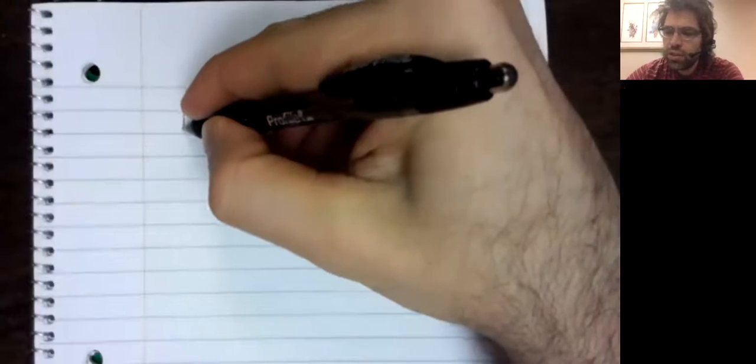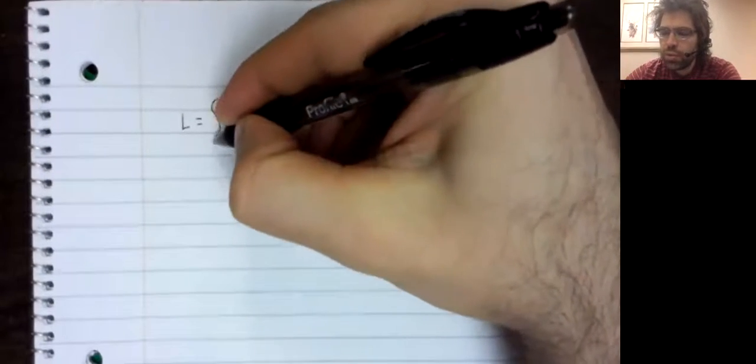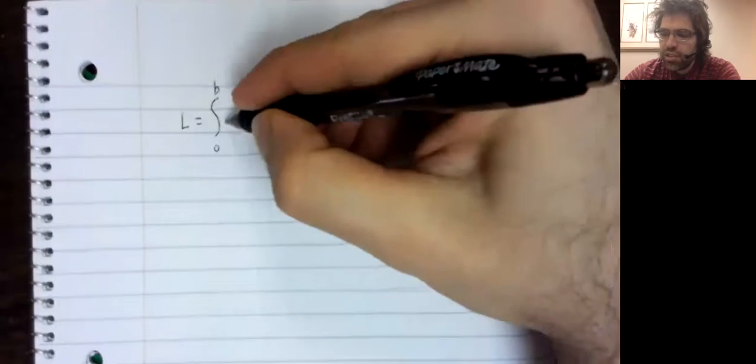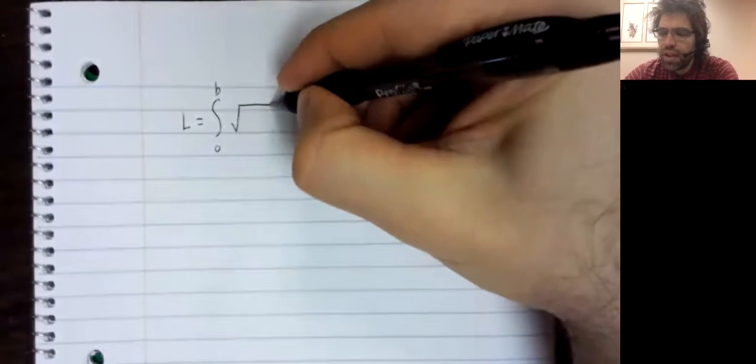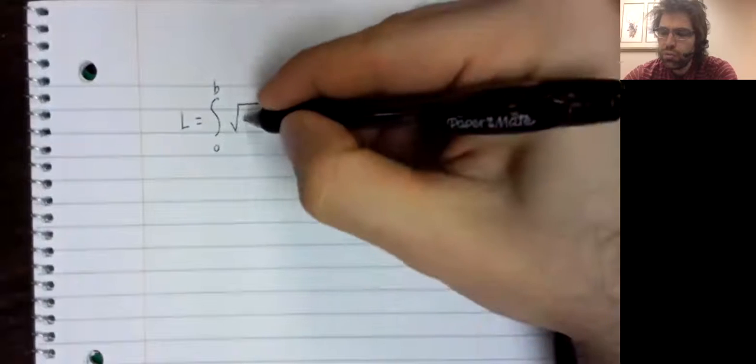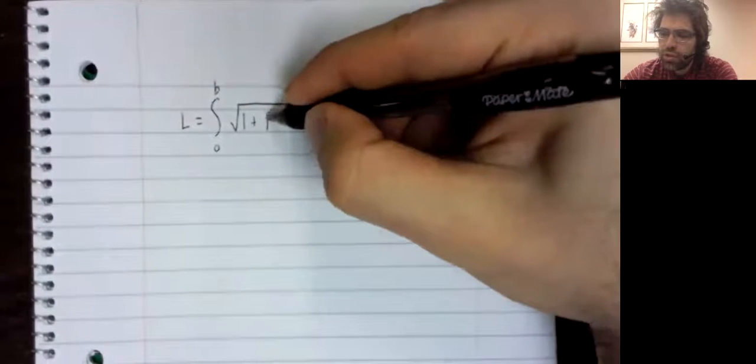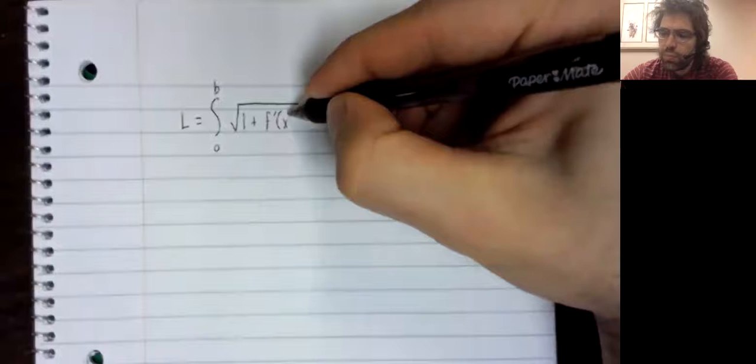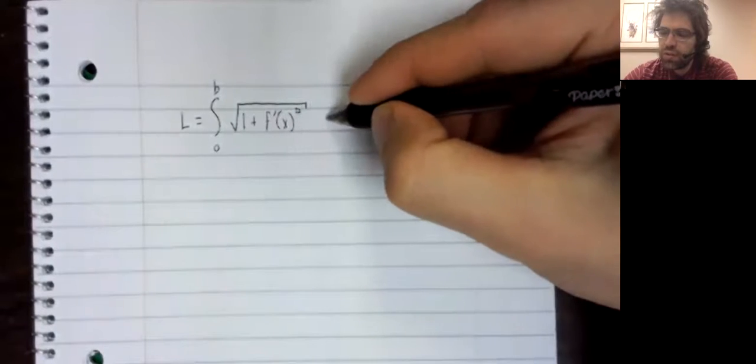We can almost never actually compute the integral that we find using the arc length formula. Why is that? Remember that the integral we get using the arc length formula is the integral of a square root. Inside the square root we have one plus the derivative squared.